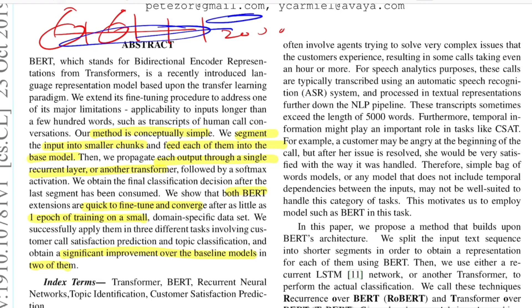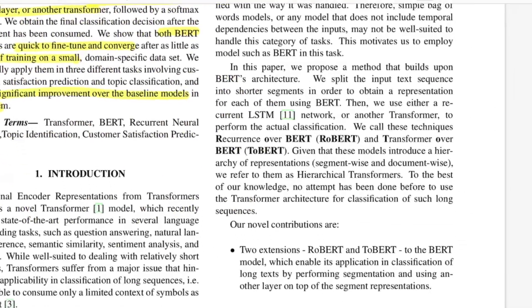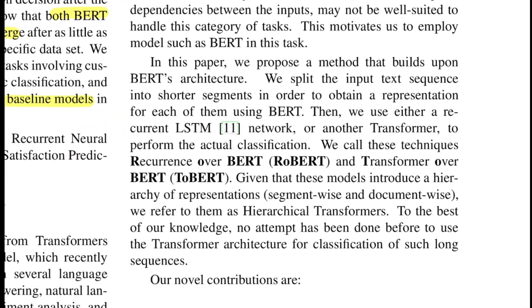They found that this extension to BERT in terms of fine-tuning is very quick and converges with just one epoch if your training data is really small, and they obtain significant improvement over baseline methods for at least two of these datasets. They proposed two methods: one is putting recurrent layers like LSTM or RNN over the entire BERT, and the second is to add one or two transformer layers over the original BERT. They accordingly name their work as RoBERT (Recurrence over BERT) and ToBERT (Transformer over BERT).